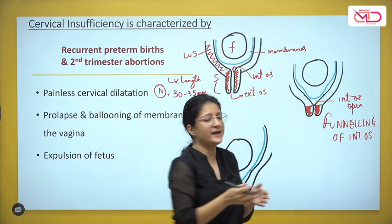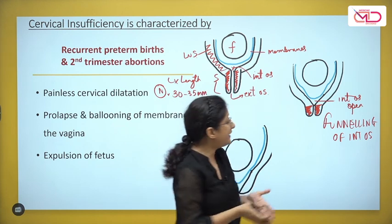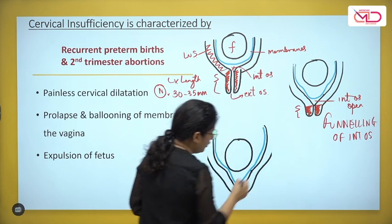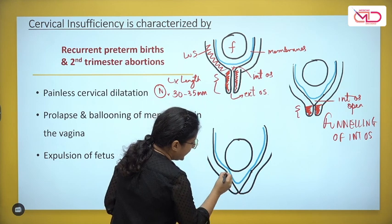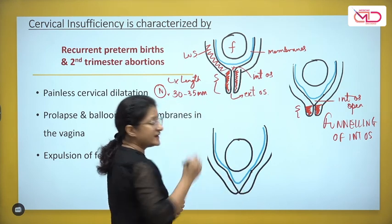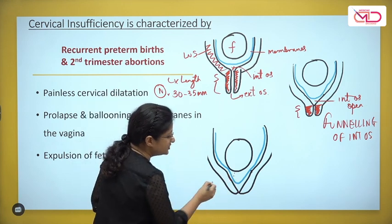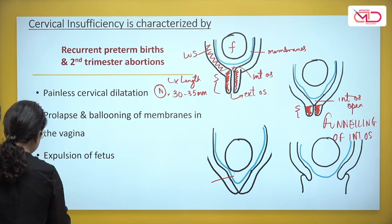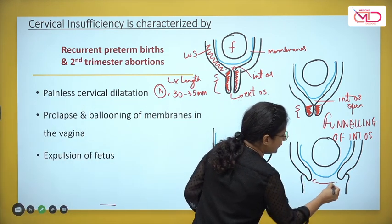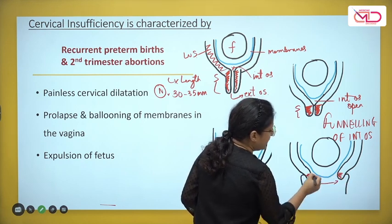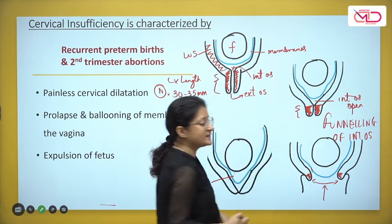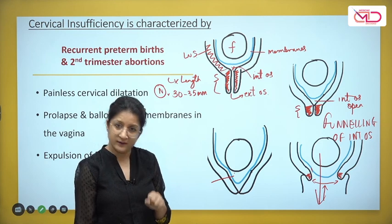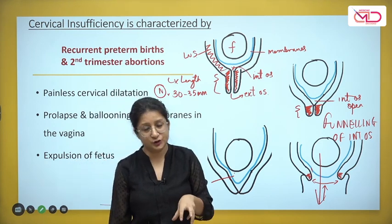As the cervix opens at the internal os, the cervical length also shortens and the cervix becomes effaced. It keeps opening and shortening until the entire cervical length has opened up and is only closed at the external os. The membranes can be seen bulging through into the cervix. Ultimately the cervix is completely open, membranes may be felt on digital examination or seen on speculum examination, and finally expulsion of the fetus takes place.